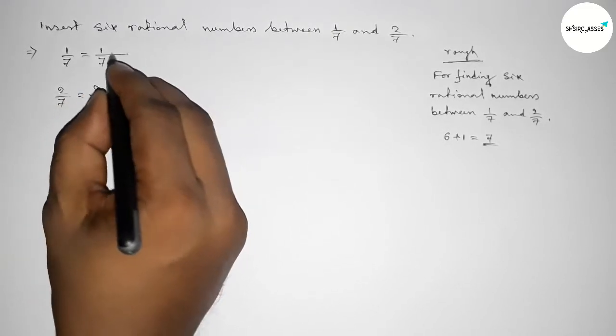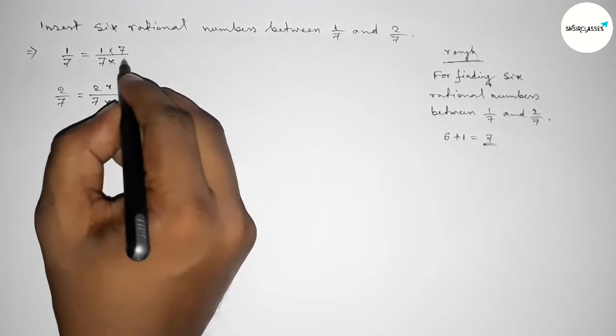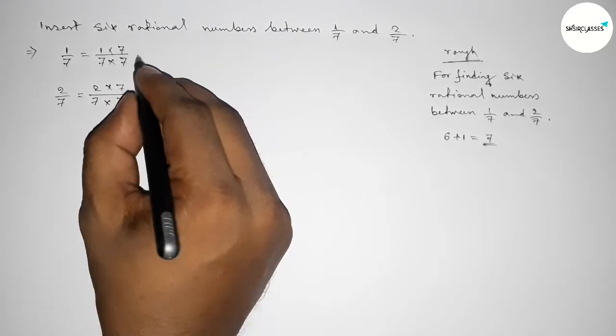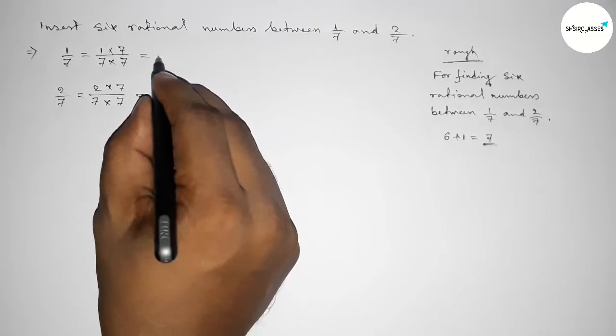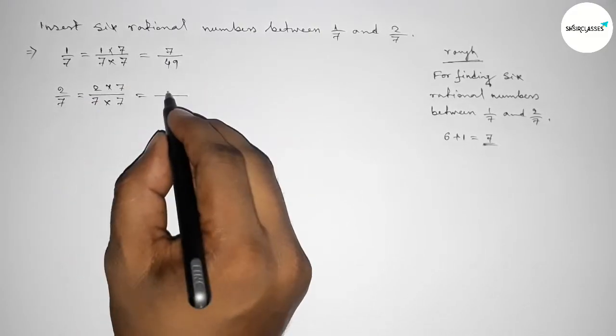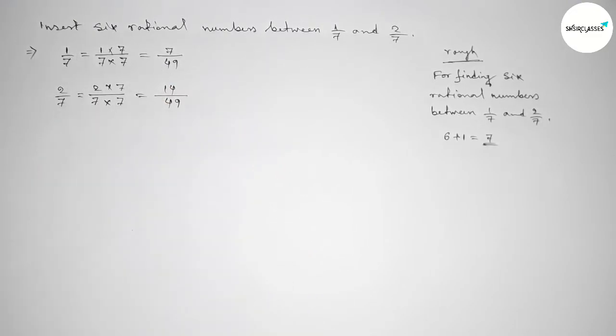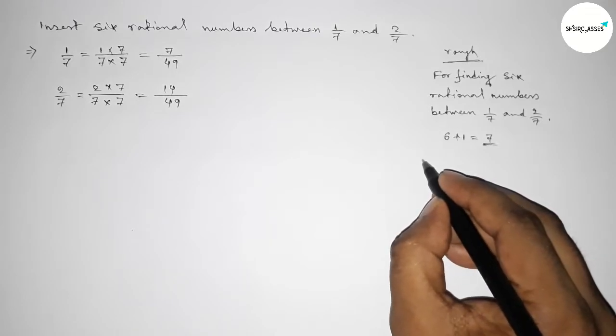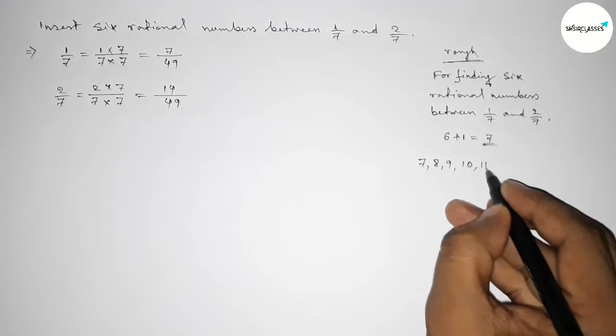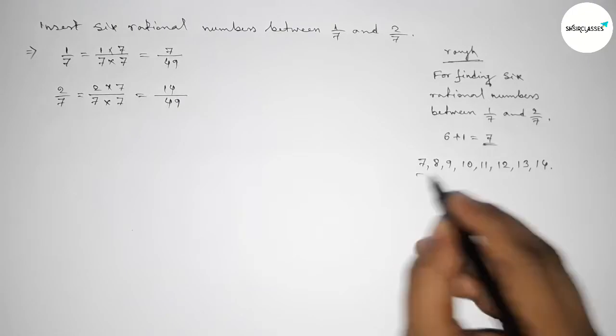Now multiplying both numbers by 7, here also 7 and 7 here also. So here equal to, this is 7/49 and this is 14/49. These are equivalent. So now between 7 to 14 we can get six natural numbers.